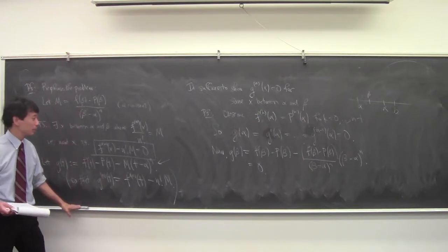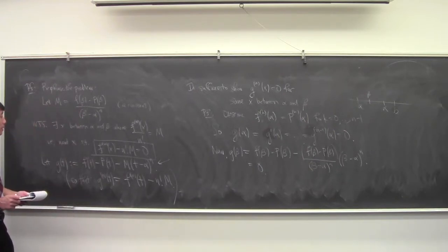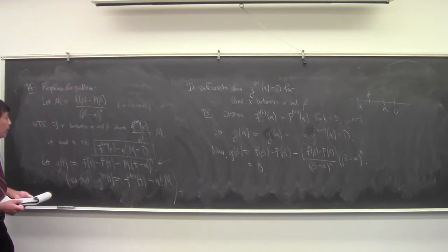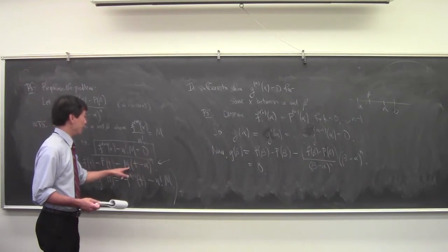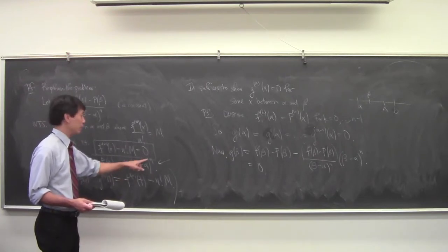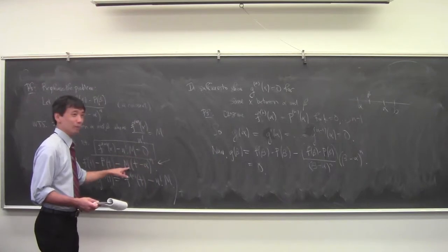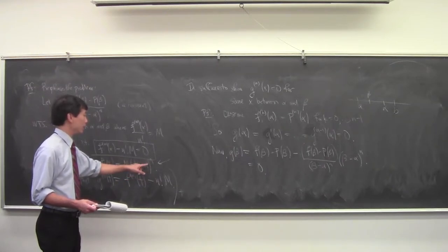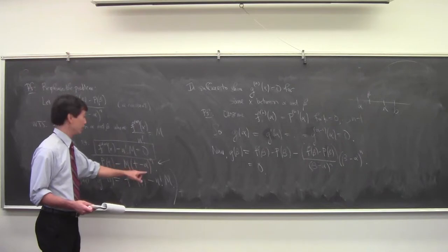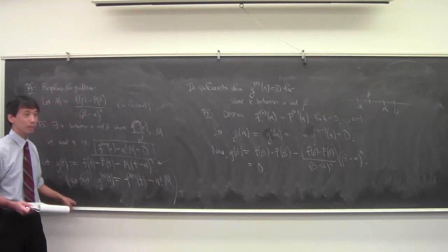In answer to why the n-th derivative of the last term is n! · M: every time you differentiate (t − alpha)^n, you pull down a factor — first n, then n−1, and so on. After n differentiations, you get n! times M, and the (t − alpha) term becomes (t − alpha)^0 = 1.